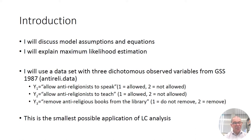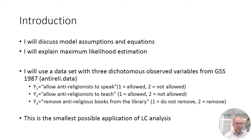This is the smallest possible application of latent class analysis — three dichotomous variables, that's the minimum. If you have two dichotomous variables, you cannot perform a latent class analysis. Typical applications will have like five, six, or seven variables for the analysis.